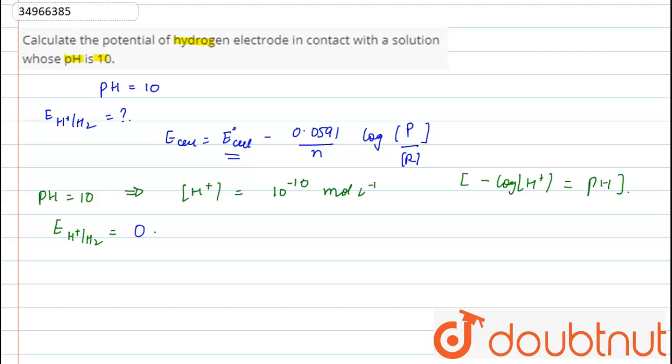minus 0.0591 divided by 1, that is the number of electrons transferred of 1, log of 1 over the concentration of H+, which is 10 raised to power minus 10.